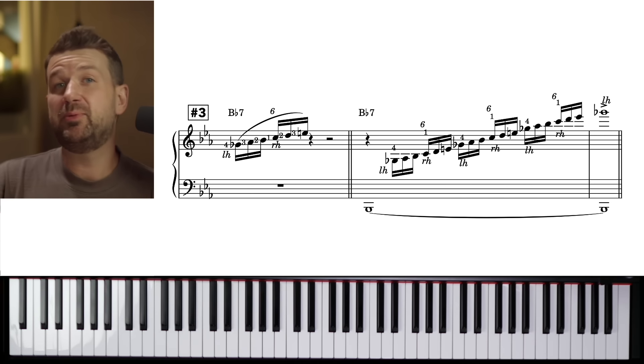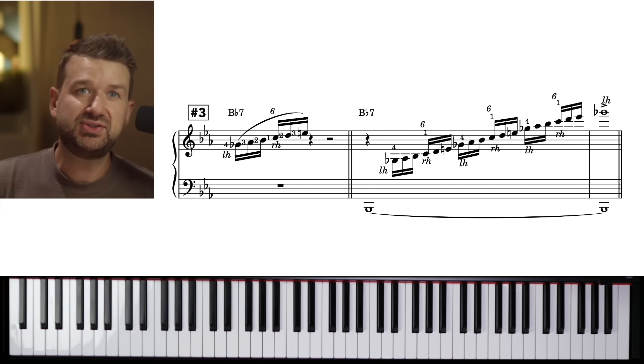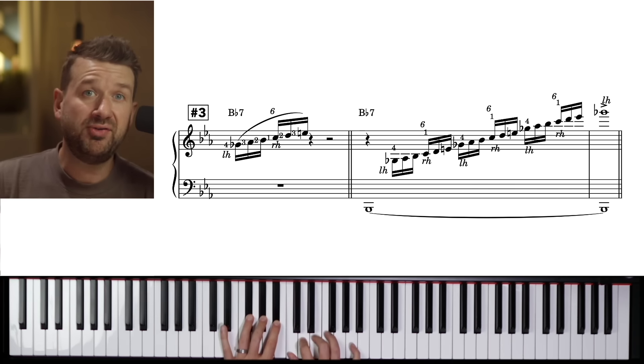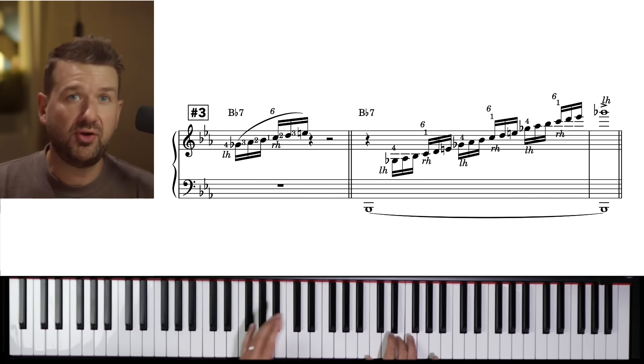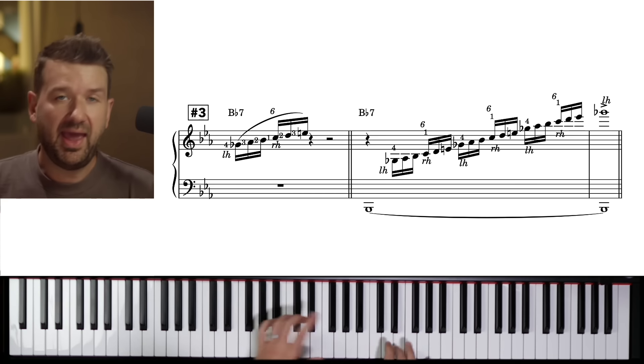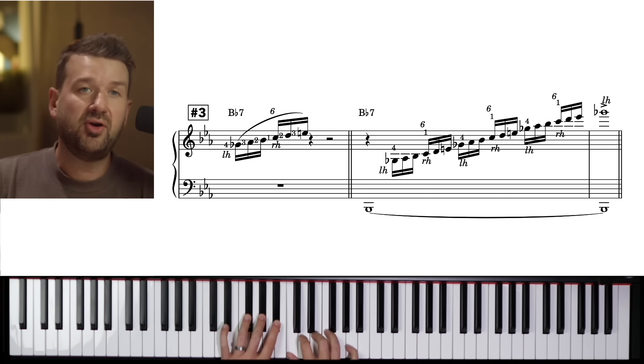All right, number three. We have a very famous whole tone run. We're back on the five chord, the B flat seven chord. And this is just starting on G flat, up in whole steps. It's a whole tone scale. Very dreamy, very spacey.